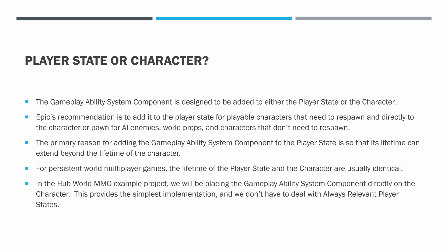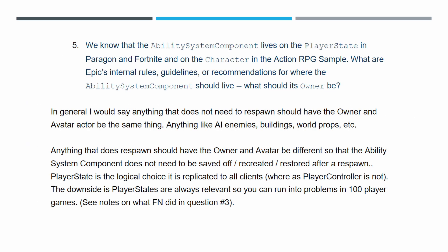So do we put this GameplayAbility System component on the player state or the character? The GameplayAbility System component is designed to be added to either the player state or the character. Let's take a look at Epic's recommendation. In a Q&A session with Epic a few years ago related to the GameplayAbility System, a question was asked — it's question number five. We know that the ability system component lives on the player state in Paragon and Fortnite and on the character in the action RPG sample. What are Epic's internal rules, guidelines, or recommendations for where the ability system component should live? What should its owner be?